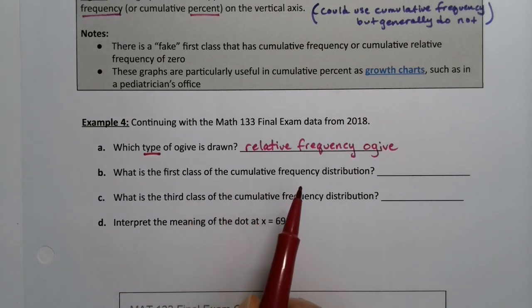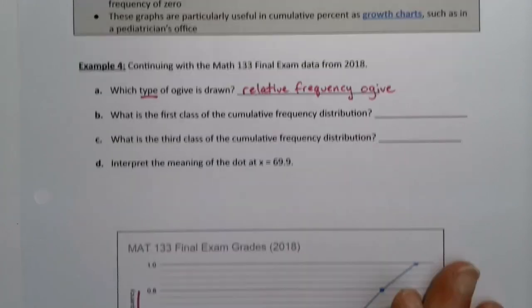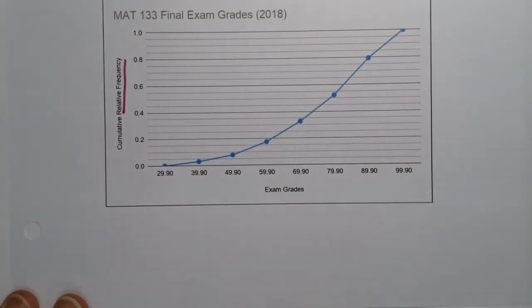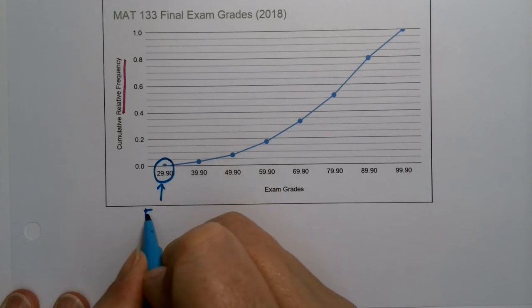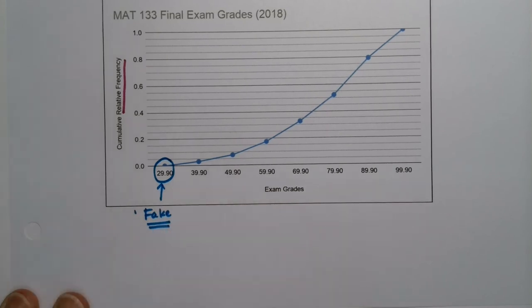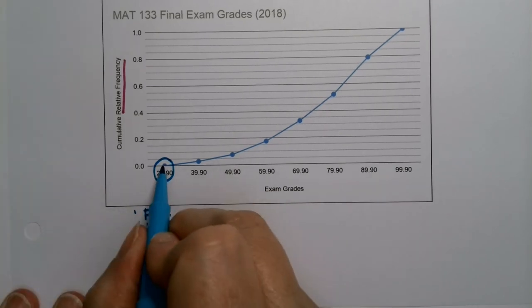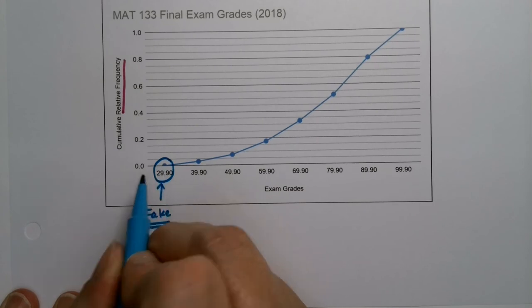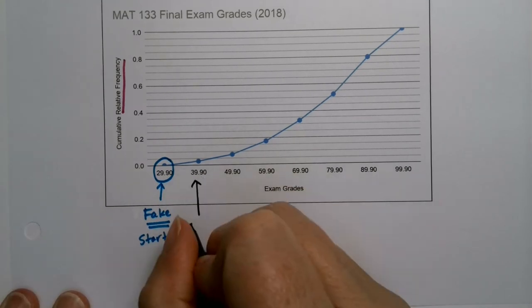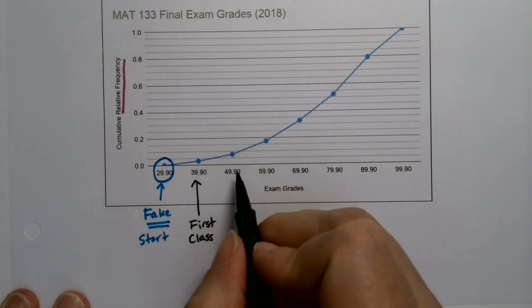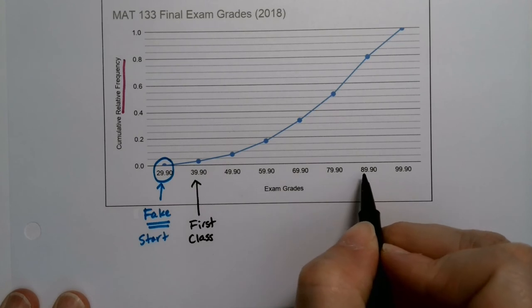Now, the first class of the cumulative frequency distribution, the third class. Okay. So let's look here. Remember that this class right here is fake. There was no class that was that low. So that is a fake start right there. It starts at zero. See how it has a y value of zero and it starts at 29.9. So the first class in the actual table is right here. And then there's the second class, the third class and so on.